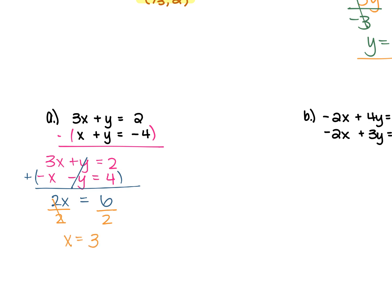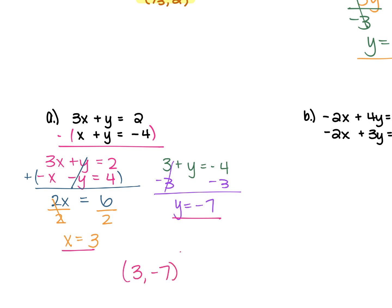Choose one of the original equations to plug that 3 in for x and solve for y. Using the bottom equation: x, which is 3, plus y equals negative 4. Move the 3 over by subtracting it from both sides and you get y equals negative 7. So x is 3, y is negative 7 — the ordered pair is (3, negative 7).